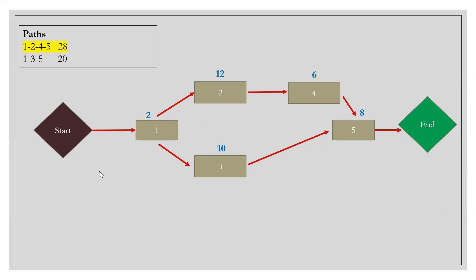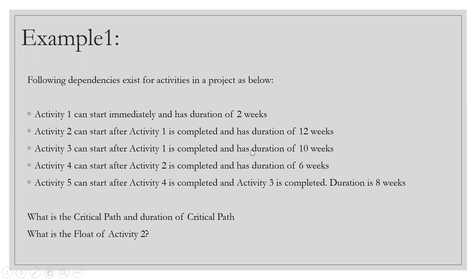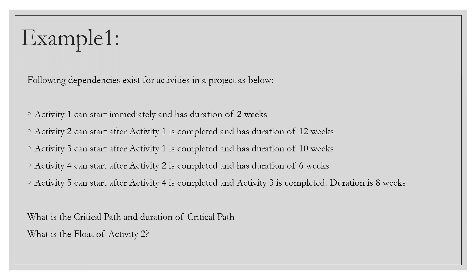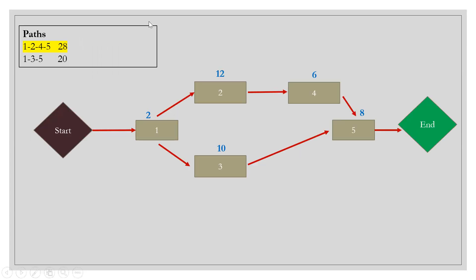All activities on the critical path will have a float of zero, which also makes your job easier if you need to find early start, early finish, late start, and late finish using the forward and backward pass — because you already know the float is zero. The answers to the example questions are: critical path is 1→2→4→5, duration is 28 weeks, and the float of Activity 2 is zero because it lies on the critical path.